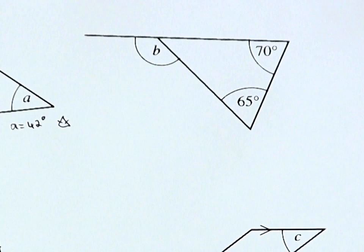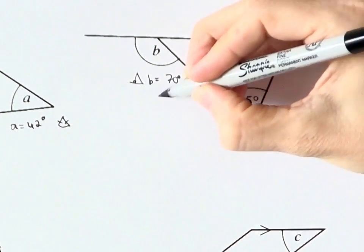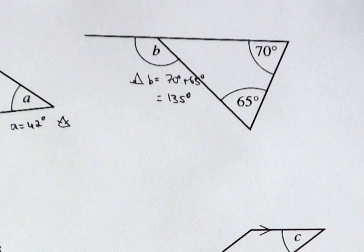Angle B must be 70 plus 65, which is 135 degrees, because it's the opposite exterior angle.